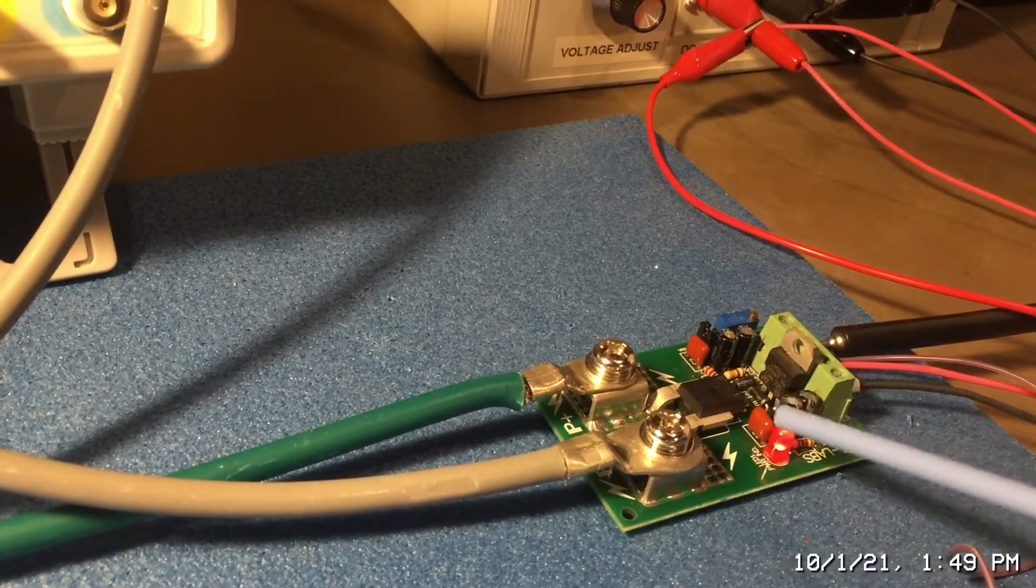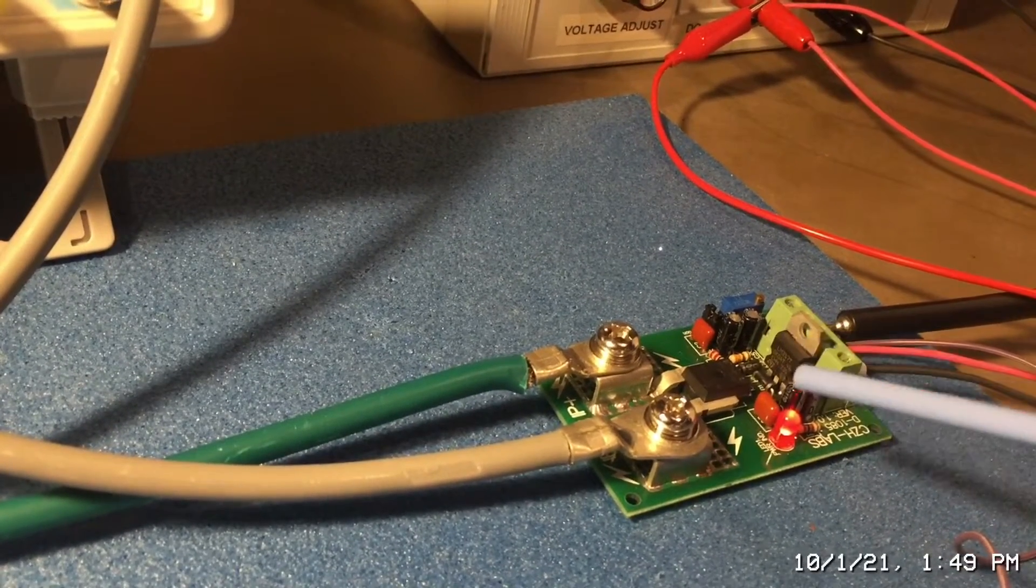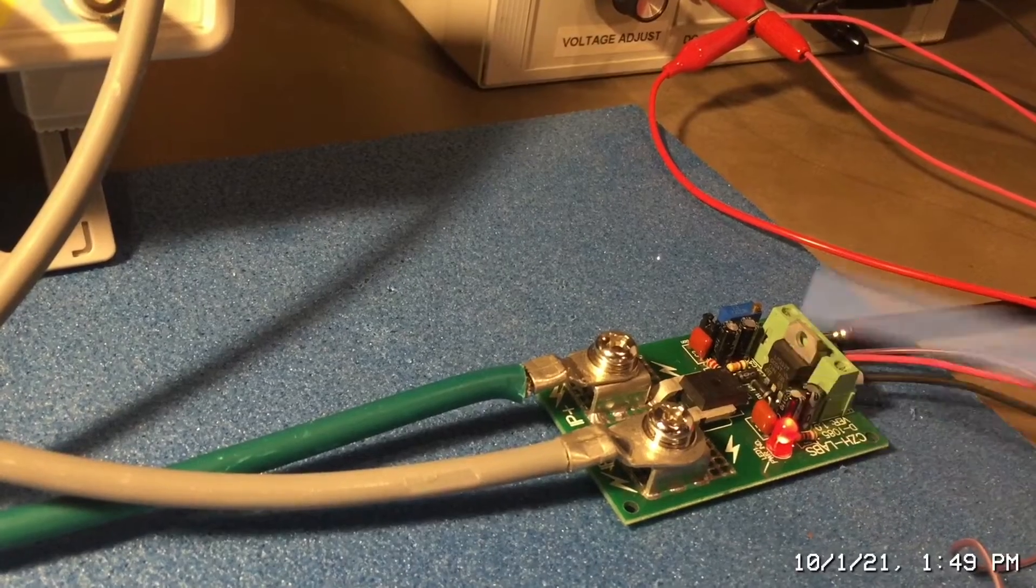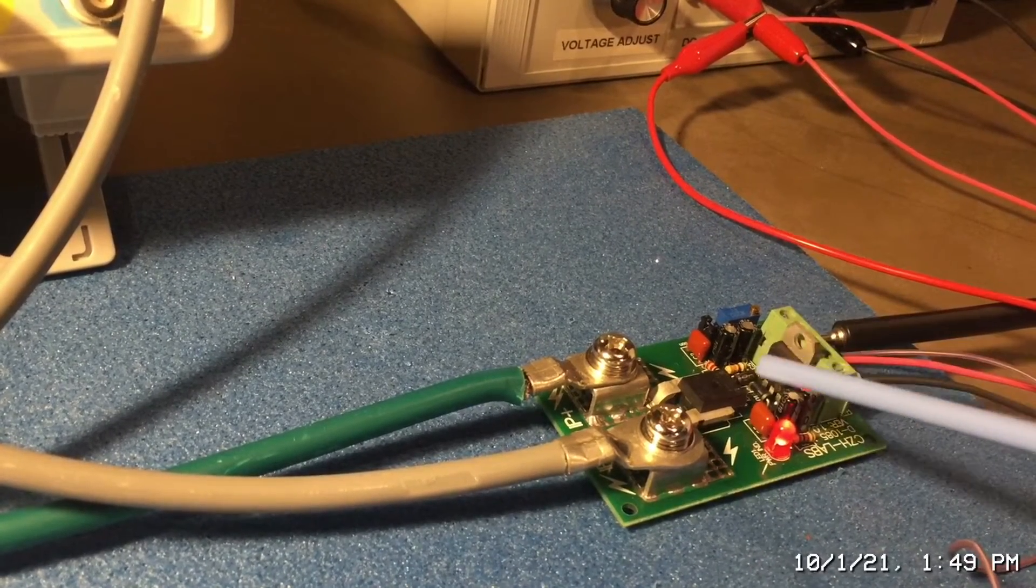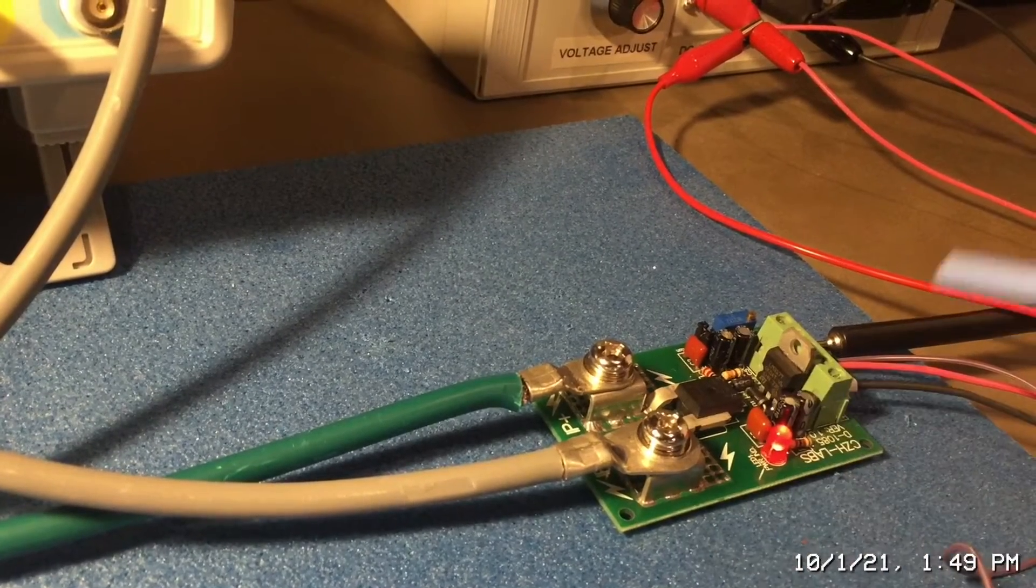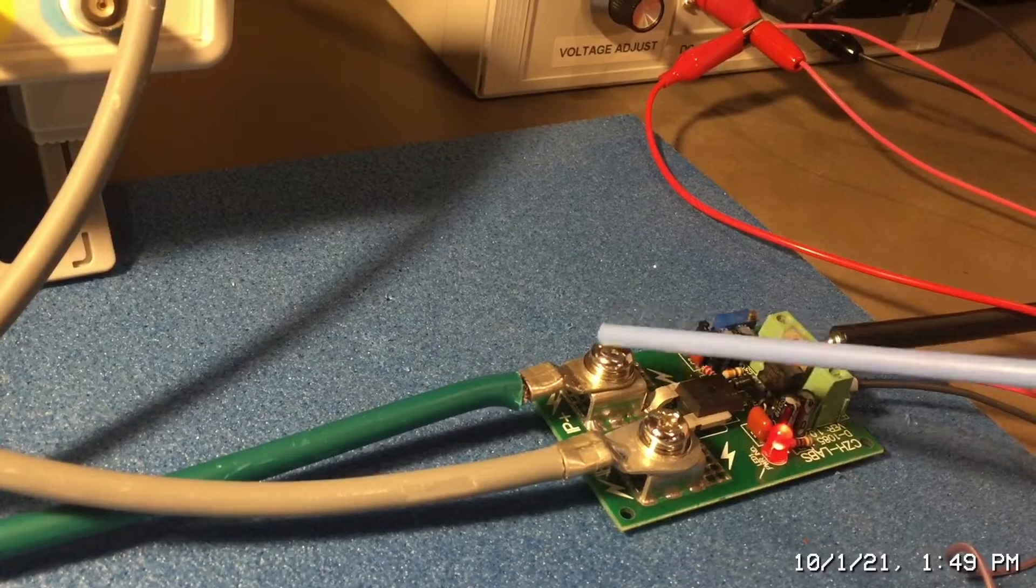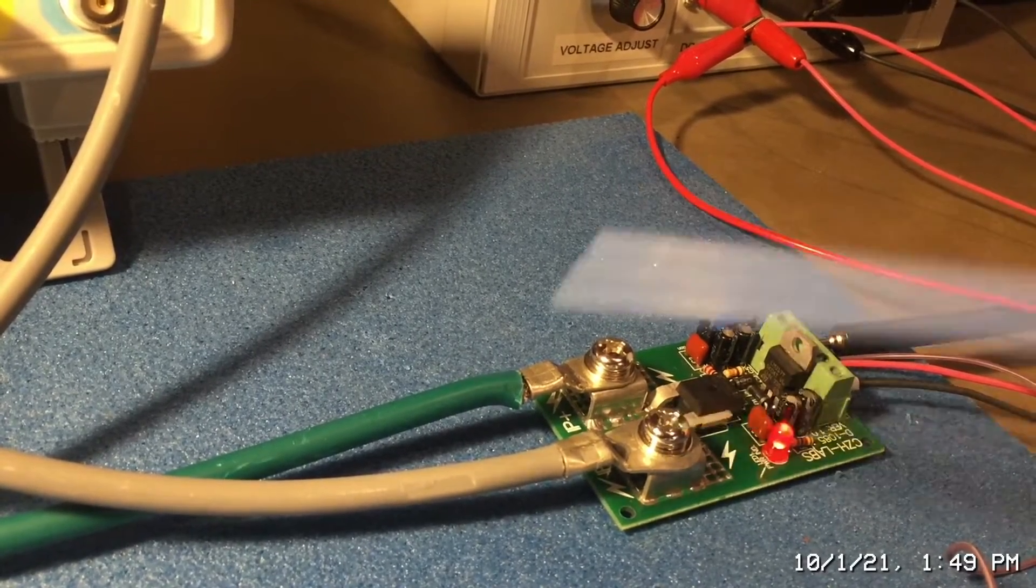And what I have here is a current sensing module that you can purchase on eBay. These cost about $15 or so and they use this ASC 758 Hall effect device to sense the current. So basically you have your positive voltage on this terminal, negative voltage on this terminal.